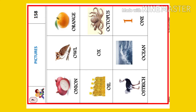See the pictures. First one is Onion. Next, Owl, Orange, Oil, Ox, Octopus, Ostrich, Ocean, One.